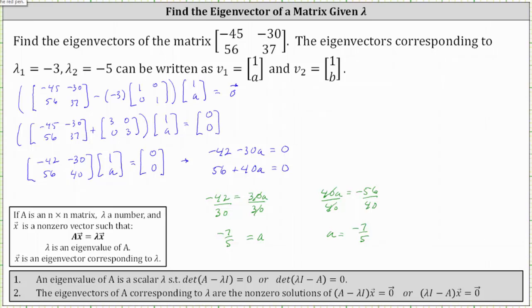So now we know the eigenvector v sub 1 that corresponds to lambda equals negative 3, where the x component is 1, is the vector 1, negative 7 fifths.